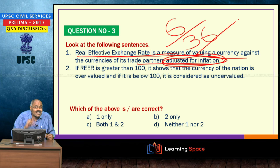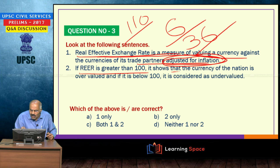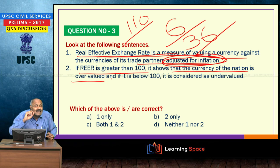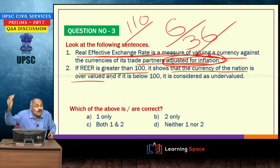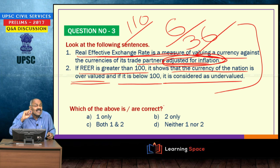India releases this index for 6 countries as well as 36 trade partners. If the real effective exchange rate is greater than 100 — currently in India's case it is around 110 — it shows that the currency of the nation is overvalued. When the currency is overvalued, exports become globally uncompetitive. If the currency is undervalued, exports become globally competitive. At present, Indian currency is overvalued. If REER is below 100, it is considered undervalued.